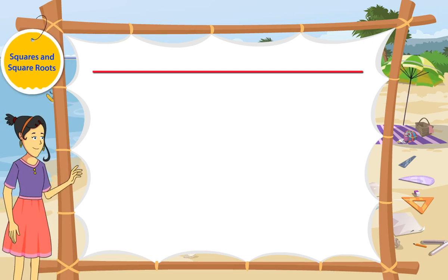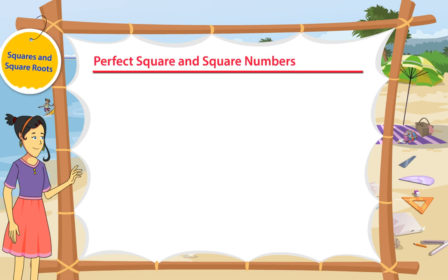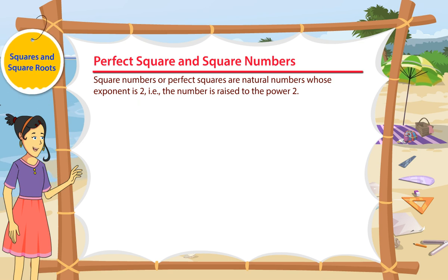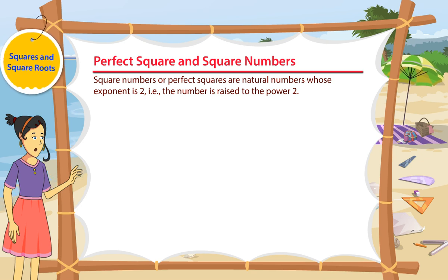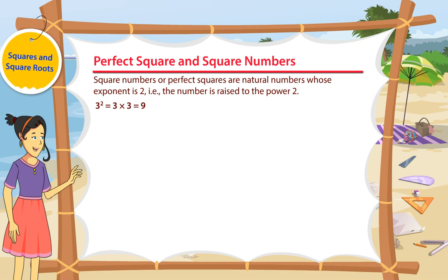Squares and Square Roots: Perfect Squares and Square Numbers. Square numbers or perfect squares are natural numbers whose exponent is 2. That is, the number is raised to the power 2. In other words, when a number is multiplied by itself, it is called its square. For example, 3 square is equal to 3 into 3, which is equal to 9.